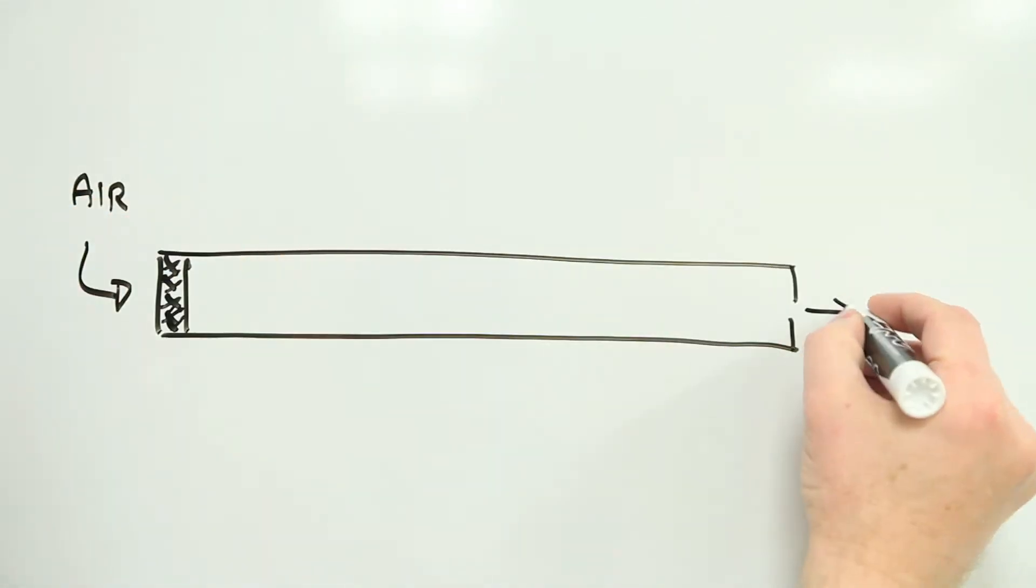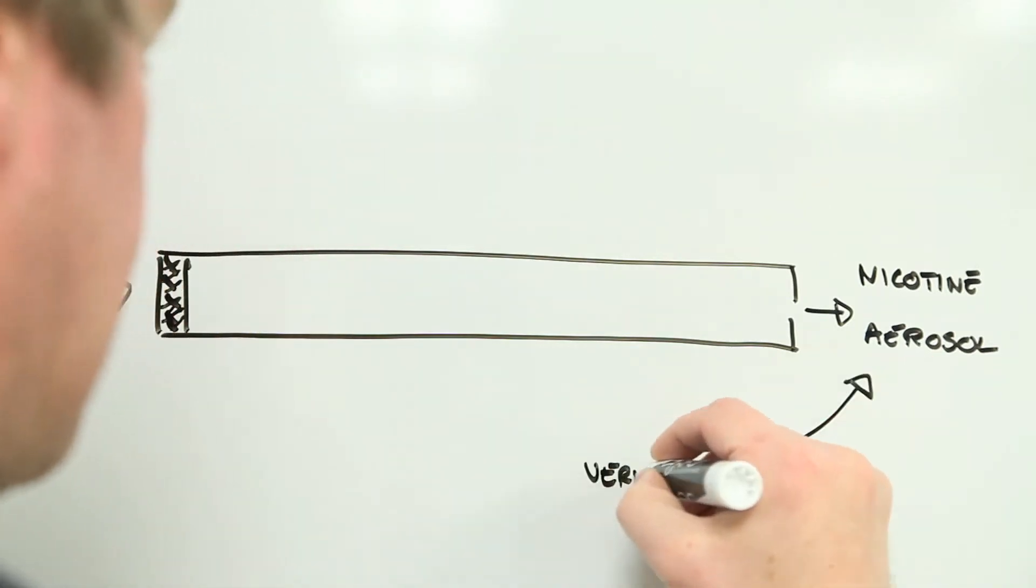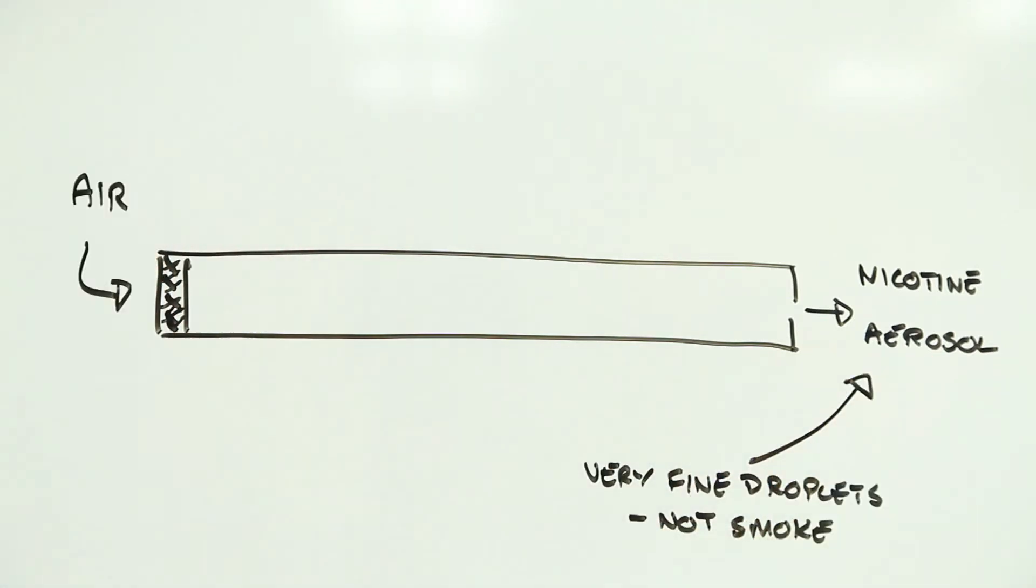Electronic cigarettes are primarily designed to get nicotine into your body via your lungs without many of the downsides of conventional cigarettes. The beauty of the system is that you retain the physical experience of smoking, or vaping as it's called in this case, but without the actual smoke.